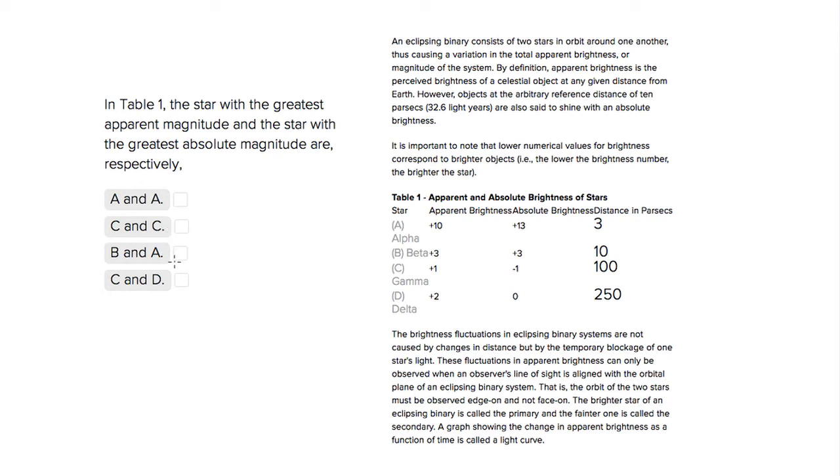This is Sophie Heller, and this is an ACT science question. The question is asking us, according to table one, the star with the greatest apparent magnitude - let's underline that - and the star with the greatest absolute magnitude are which ones?